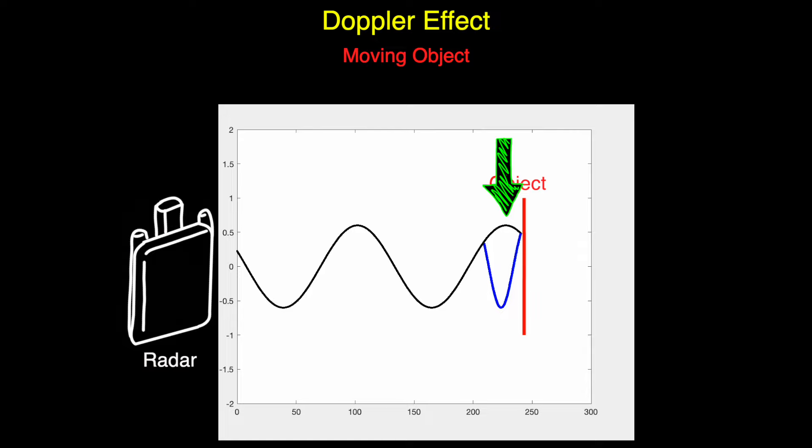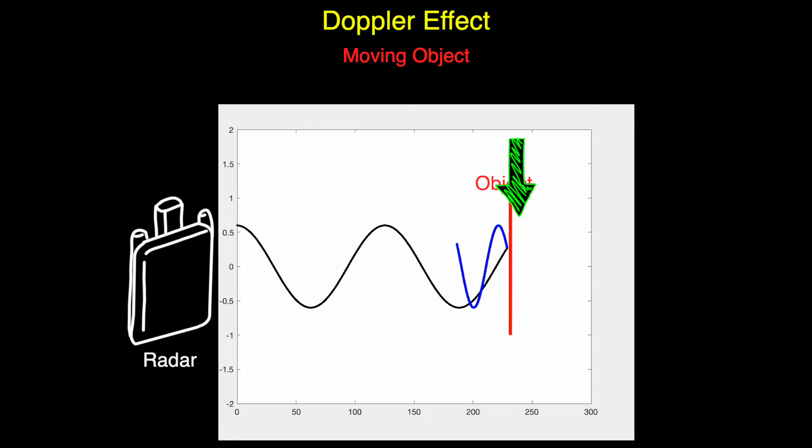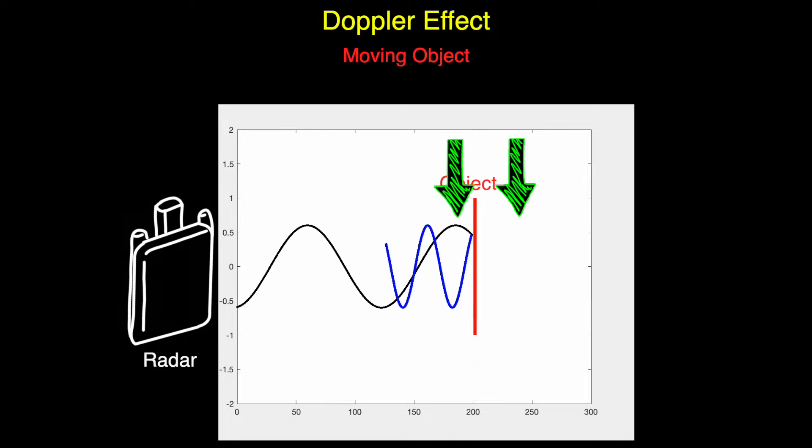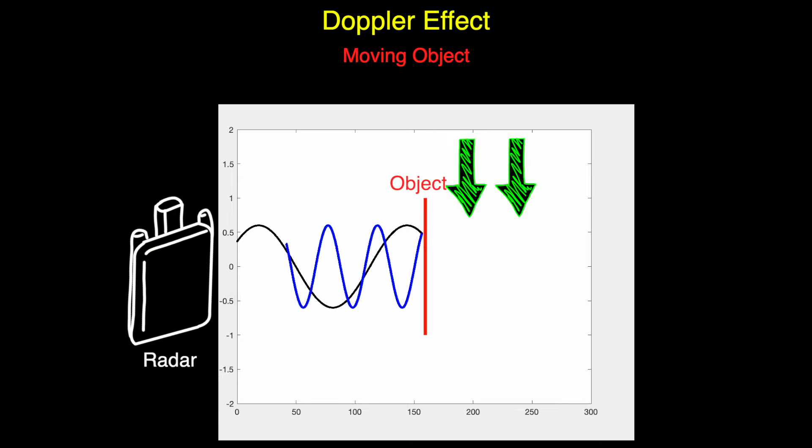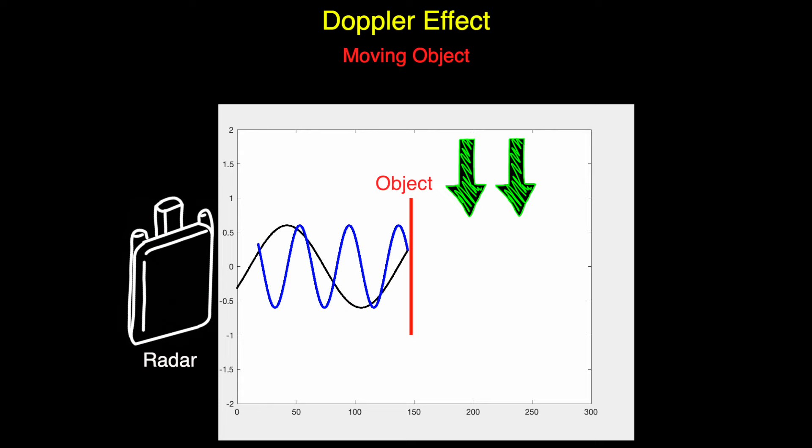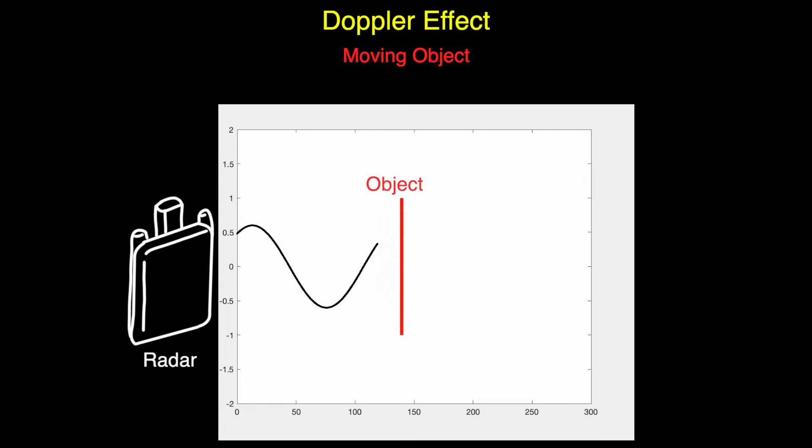However, if the object is moving towards the radar, then the reflected frequency is higher than the transmit frequency, due to the fact that the later parts of the signal don't have to travel as far before being reflected. This peak reflects off the object here, but the second peak only had to travel to this spot before being reflected, since the object moved closer. Therefore, it's caught up a little bit to the earlier peak of the signal that had to travel further. This increases the frequency proportional to how fast the object is moving. And the opposite is true if the object is moving away.